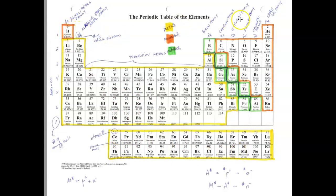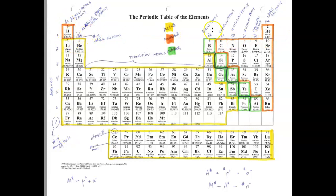On top of your periodic table, the columns will be labeled 1 through 18, because there are 18 columns. The rows going from left to right are called periods, and there are a total of seven periods.